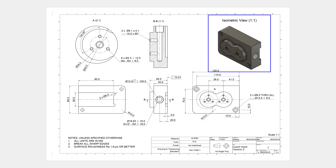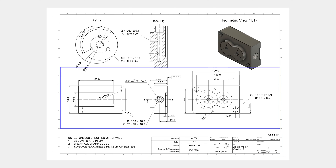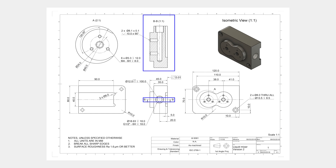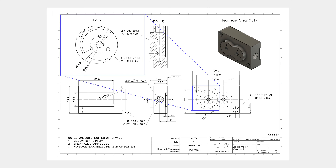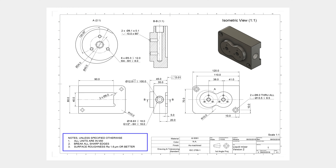Let's start with what a mechanical drawing should look like. A technical drawing typically consists of the following components: a title block, an isometric pictorial view, the main orthographic views of the part, section views or detail views, and notes to the manufacturer.